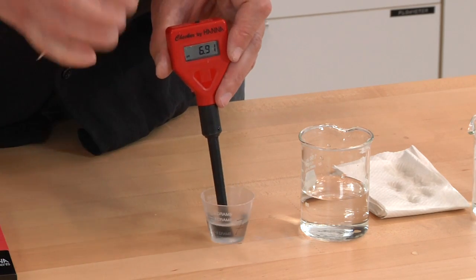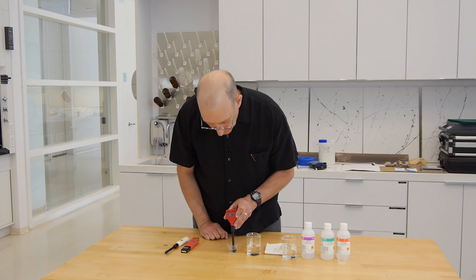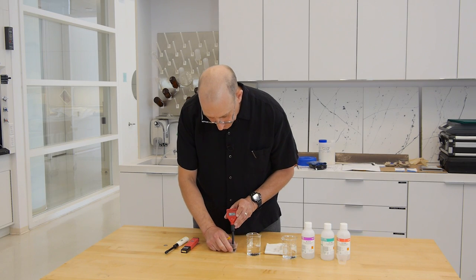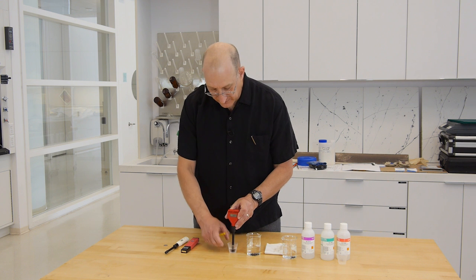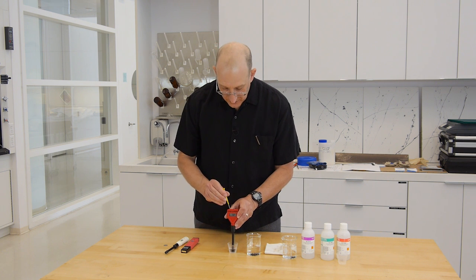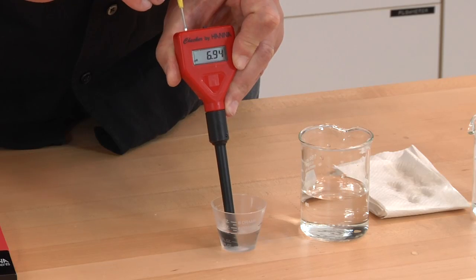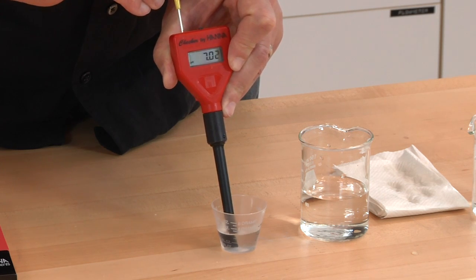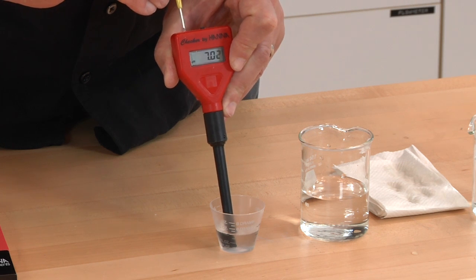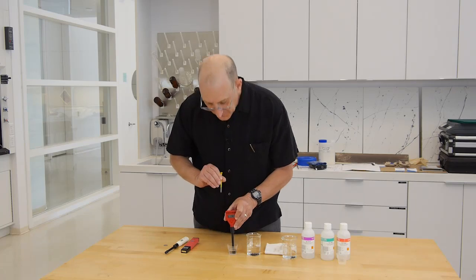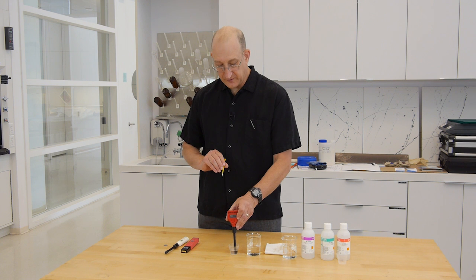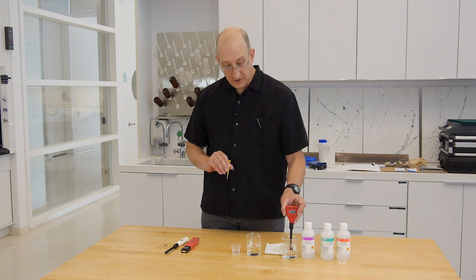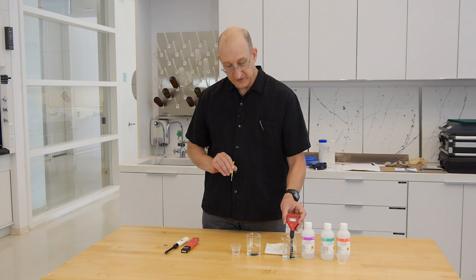Once our reading has stabilized, we're reading about 6.9, 6.89, 6.9. We turn the calibration screw until we get it to pH 7. So here we're at 7.0. We go back into our tap water to rinse the electrode.